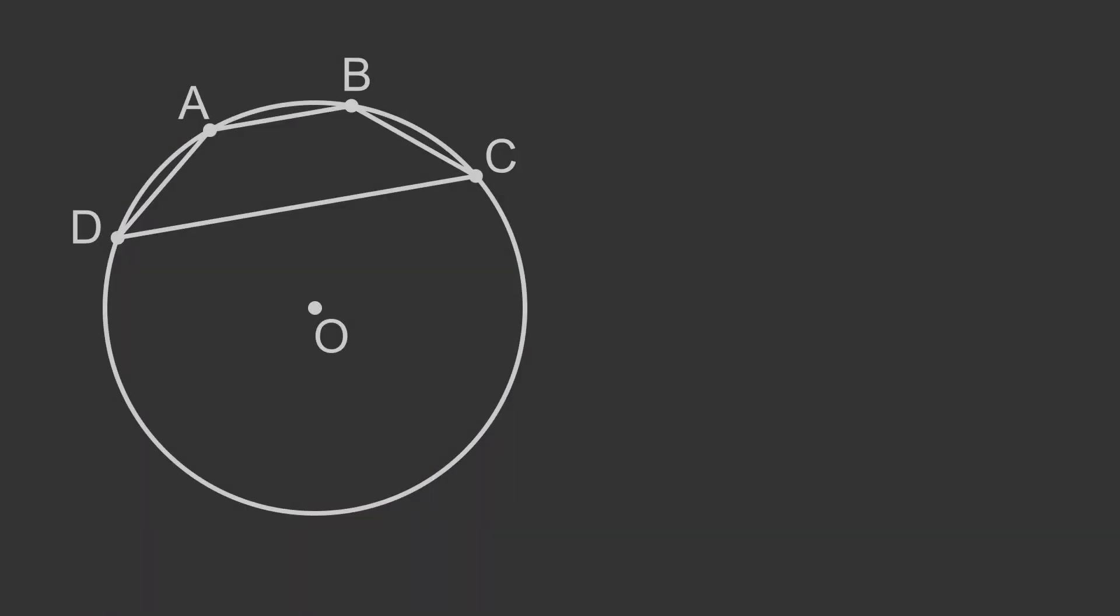We also have the case where all four corners are in the same semicircle. In other words, the centre of the circle O is not inside the quadrilateral. It is easy to show that the theorem applies to this case too.